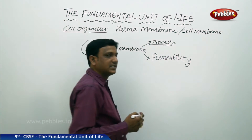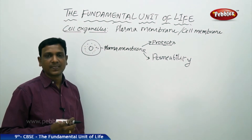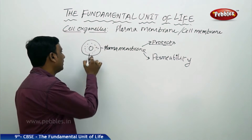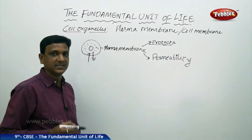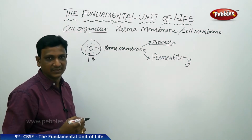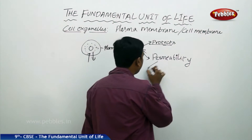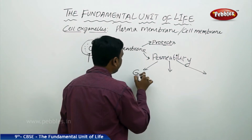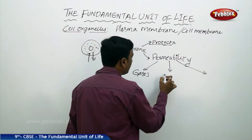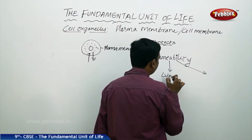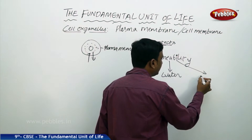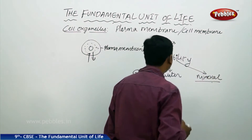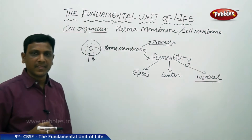What is this selective permeability? Basically, three kinds of materials travel across the cell membrane or plasma membrane. One is gases. The second is liquids like water. And the third is minerals and other nutrients.